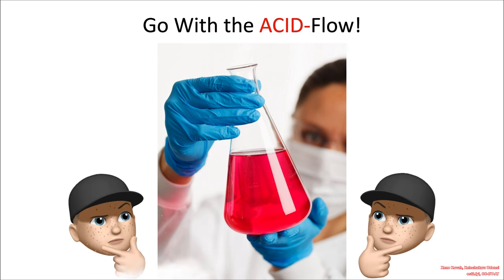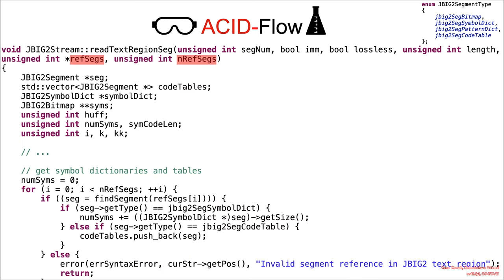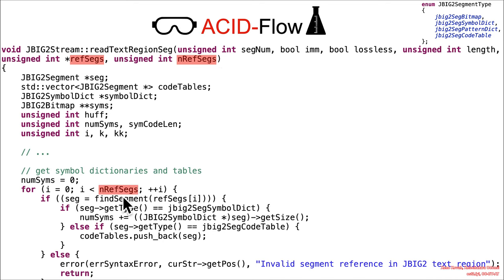Shall we go with the ACID flow? We've got attacker-controlled references to segments, and the number of set references to segments is also going to be attacker-controlled. We have that used eventually in a for loop, so that's starting to look immediately like an ACID exit condition.